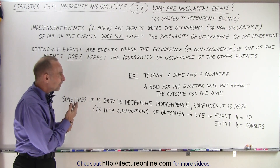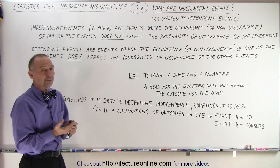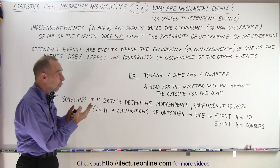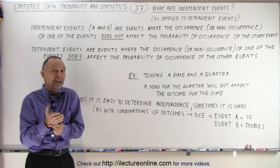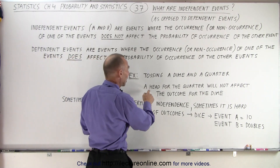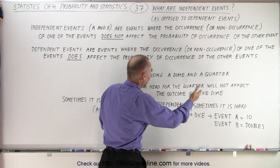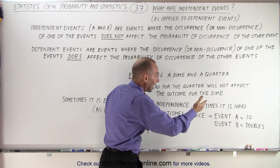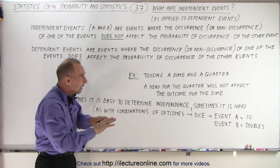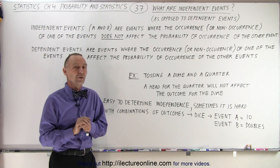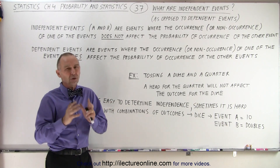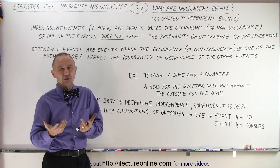For example, let's say we toss a dime and a quarter. It doesn't matter what the result is when we toss the quarter — it will not affect the result of the dime. If we toss a head for the quarter, that will not affect the outcome for the dime. It could still be heads or tails, and it doesn't matter what happened to the quarter. Those are what we call independent events, and those are easy to determine.